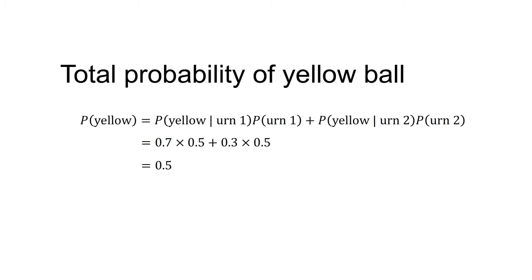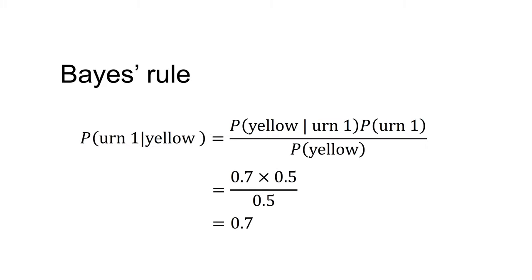Therefore, the total probability of drawing a yellow ball is: P(yellow) equals P(yellow|urn one) times P(urn one) plus P(yellow|urn two) times P(urn two), which equals 0.7 × 0.5 + 0.3 × 0.5 = 0.5. Now putting this into Bayes' rule: P(urn one | yellow ball) equals P(yellow|urn one) times P(urn one) divided by P(yellow), which equals 0.7 × 0.5 / 0.5 = 0.7.